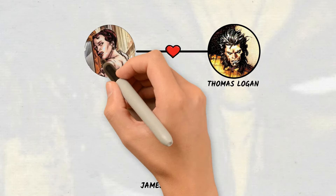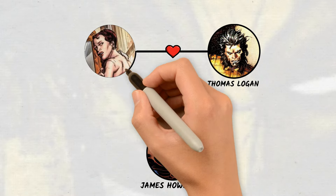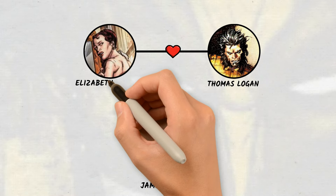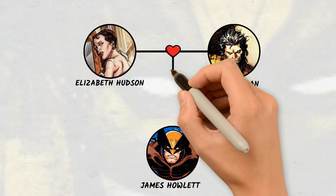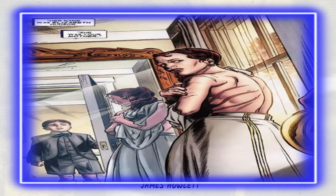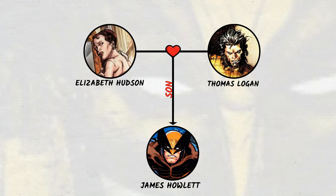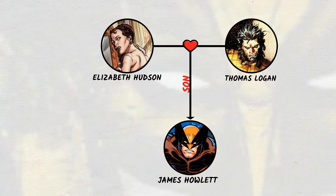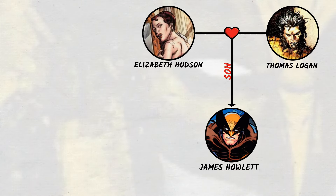His mother, Elizabeth, who first appeared in the comic Wolverine: The Origin Volume 1, after James killed Thomas and seeing the activation of James' claw ability, she quickly expelled her son, who had to depart the Howlett Estate with his companion Rose. After that, Elizabeth turned to Thomas Logan's body and took all the blame before shooting herself with his gun.